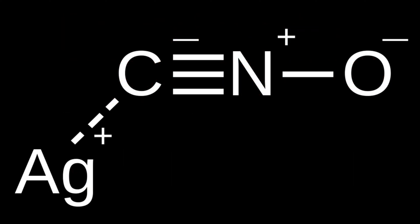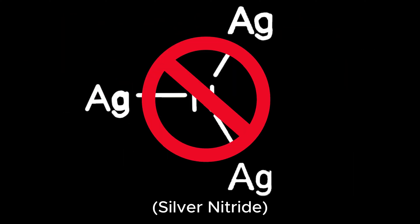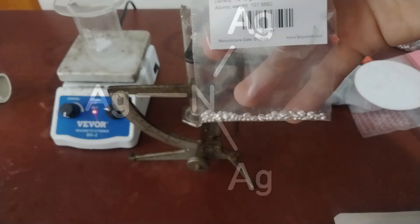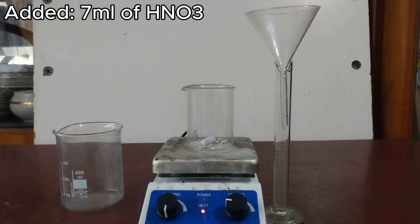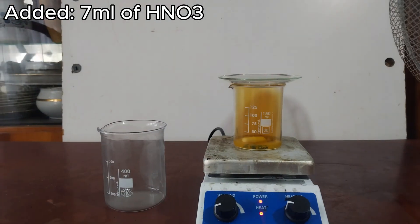Today we'll be actually making some silver fulminate, not silver nitrite or some other silver compound. First we measure out 5 grams of silver and then we measure out 7 milliliters of fuming nitric acid.